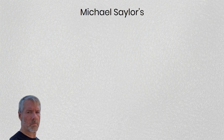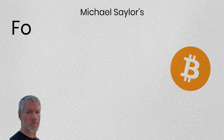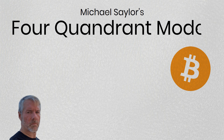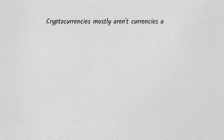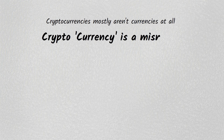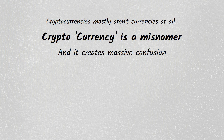Let me give you a model, a four-quadrant magic quadrant model. I'll start with the observation: cryptocurrencies mostly aren't currencies at all. 'Cryptocurrency' is a misnomer and it creates massive confusion — I think people in the space are confused, and people out of the space are confused. Here's the way I would segment the space: four quadrants.